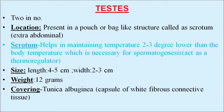The scrotum is very important in spermatogenesis as it helps in maintenance of temperature 2 to 3 degrees lower than body temperature, which is necessary for spermatogenesis. We can say the scrotum acts as a thermoregulator. The length of the testes is 4 to 5 centimeters and width 2 to 3 centimeters. Each testis weighs about 12 grams. The covering of the testes is the tunica albuginea, which is a capsule of white fibrous connective tissue.